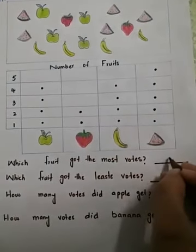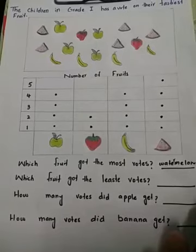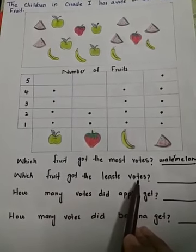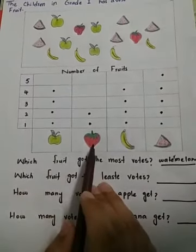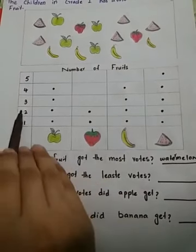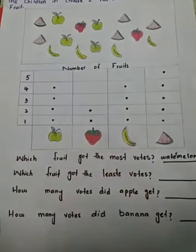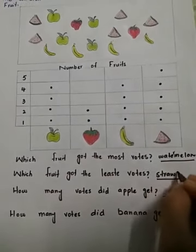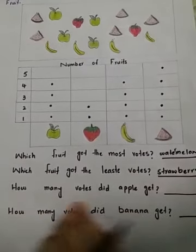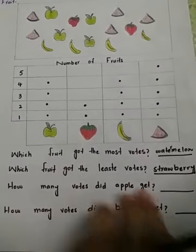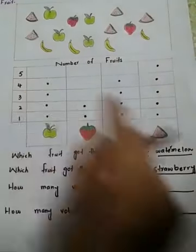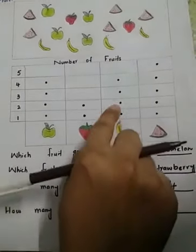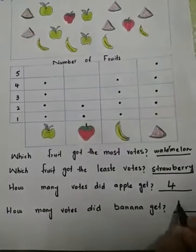Which fruit got the least votes? Strawberry — only two votes for strawberry. How many votes did apple get? One, two, three, four — four votes. How many votes did banana get? One, two, three, four — four votes for banana.